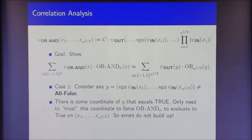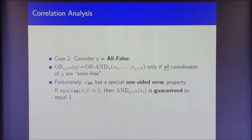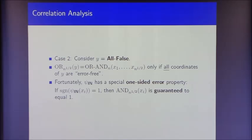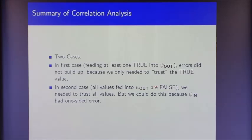The second case is y equal to the all-false vector. Here we really need to trust all coordinates, because if even a single one that ψ_out believes is false is actually true, you change the value of OR-AND. Fortunately, the inner dual witness has a special one-sided error property: if sign(ψ_in) evaluated on any input equals +1, then the AND function evaluated on that same input is guaranteed to equal +1 — there is no error in this case. This completes the correlation analysis.